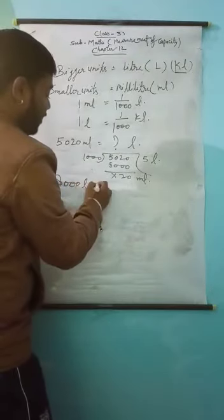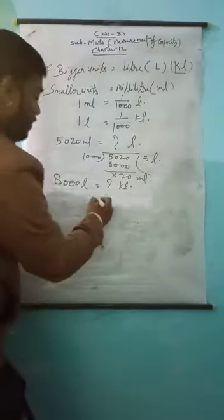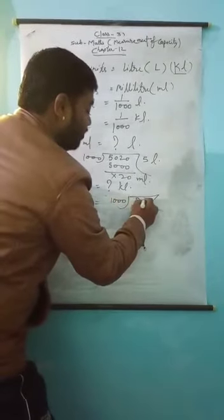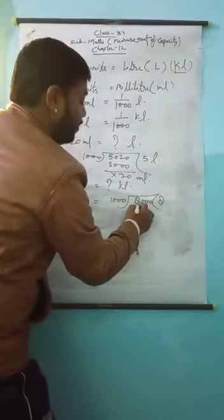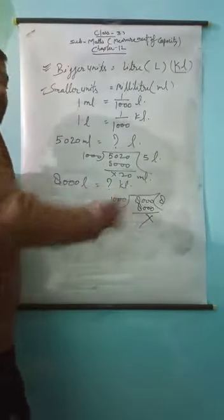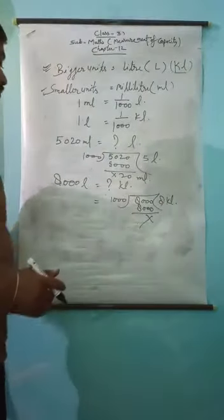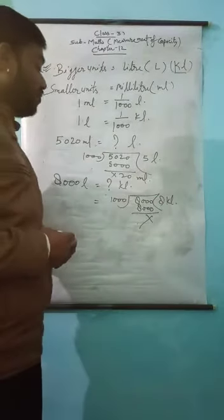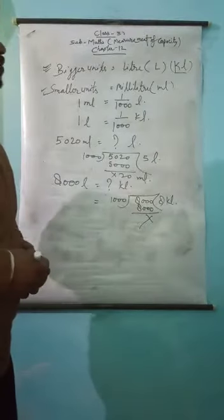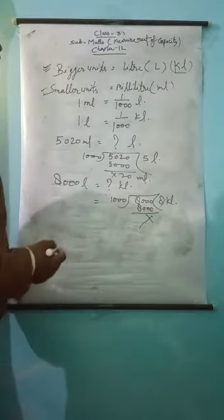Suppose eight thousand liters — convert into kilo liters. We divide eight thousand by one thousand, which gives eight with zero remainder. So eight thousand liters is equal to eight kilo liters. I hope you understand. Write this formula — it is very important.